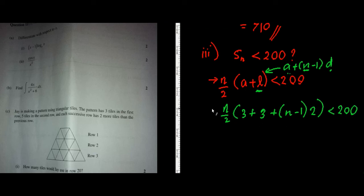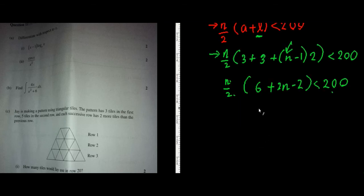Now I got an inequality with just one unknown, so n is my variable. I guess I'll expand this and see what I get. So I have n on 2, and then I have six plus two n minus two has to be less than two hundred. I can simplify this out to be n on 2, four plus two n is less than two hundred. And now this two I can divide with what's inside. And now I will expand the brackets out so I will end up getting two n plus n squared has to be less than two hundred. This is simply a quadratic, n squared plus two n minus two hundred is less than zero.